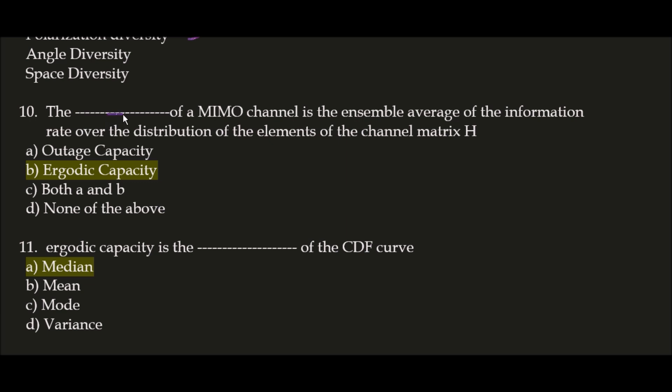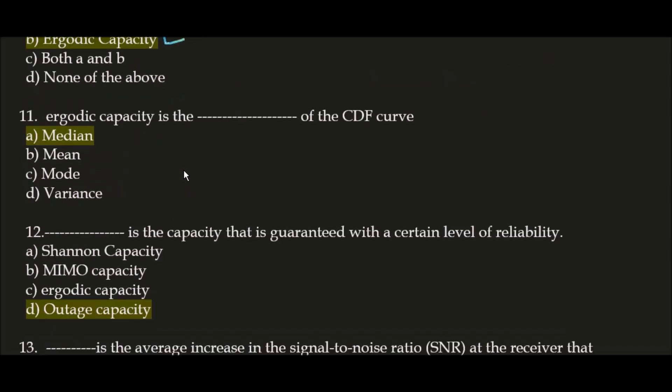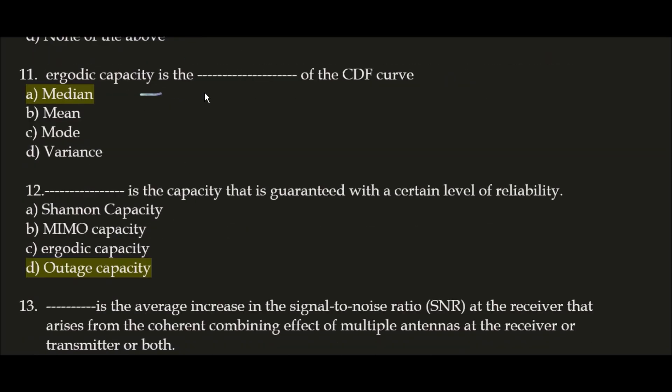Next question: the blank space of a MIMO channel is the ensemble average of the information rate over the distribution of the elements of the channel matrix H. The correct answer is option B: ergodic capacity. The ergodic capacity of a MIMO channel is the ensemble average of the information rate over the distribution of the channel matrix H.